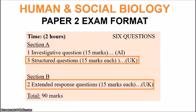For Human and Social Biology, in section A we have three structured questions, and then in section B you only have two extended response questions. They are also each worth 15 marks as well, and all of these types of questions are testing your use of knowledge.